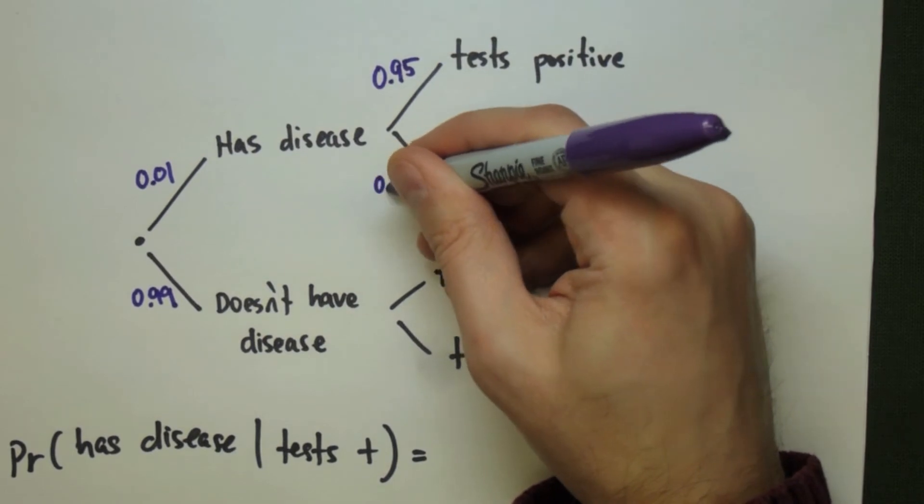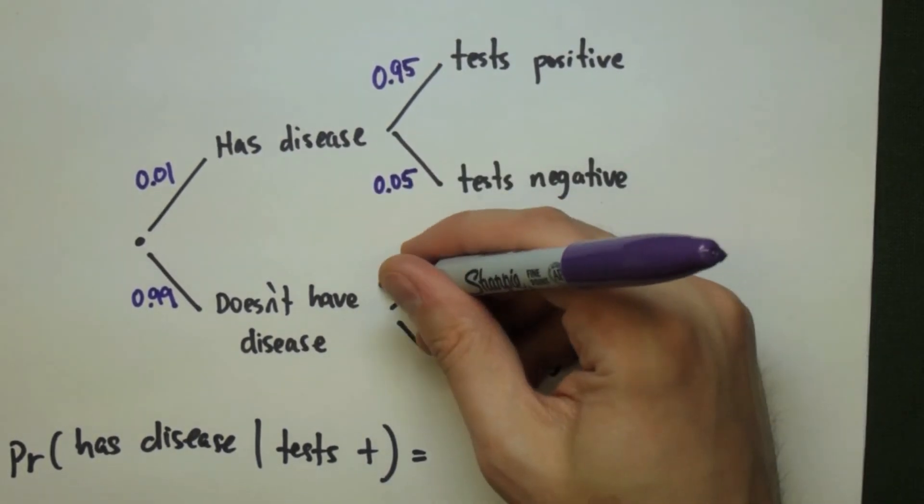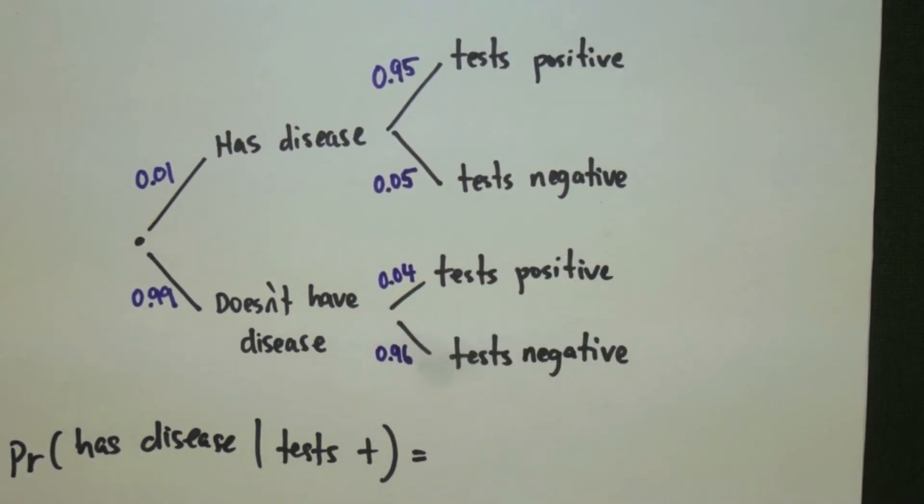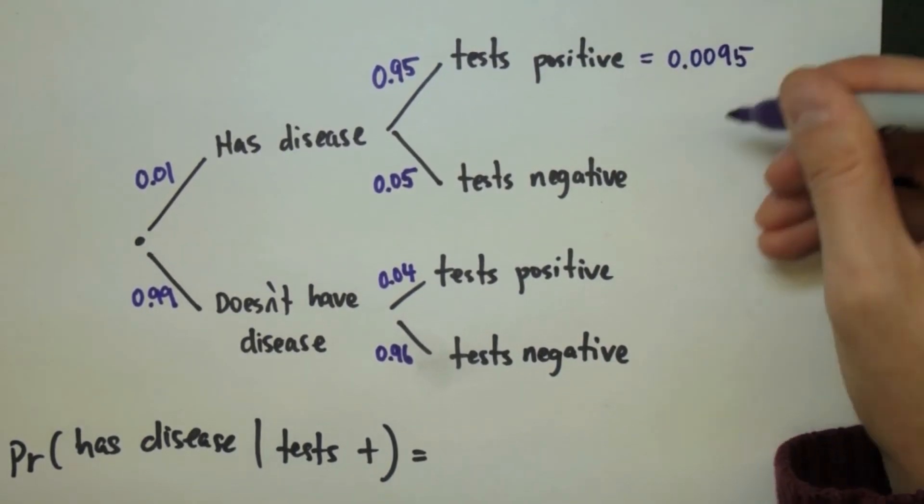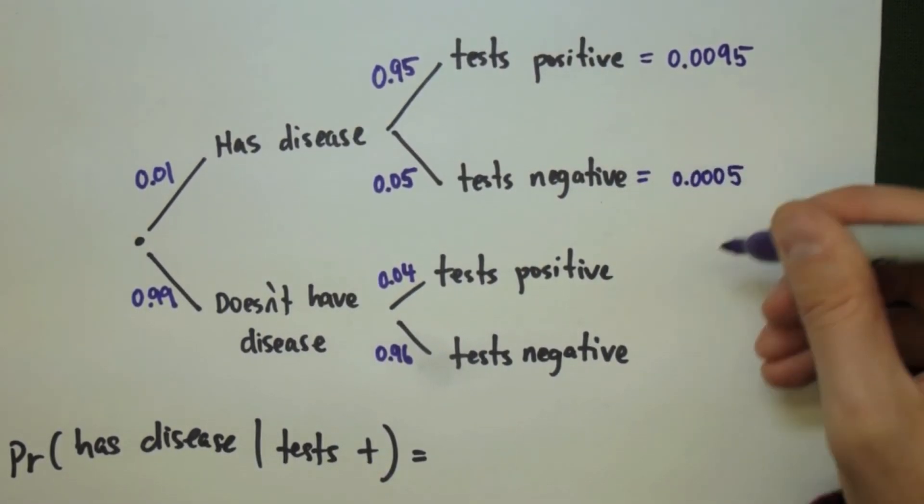Of the people who have the disease, 95% test positive and 5% test negative. People who don't have the disease, 4% test positive, which leaves 96% to test negative. The branches that we're looking for are going to be the test positive branches. We compute the probabilities along the branches and we end up with these numbers here.